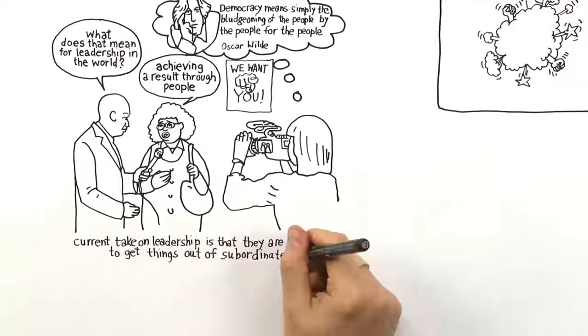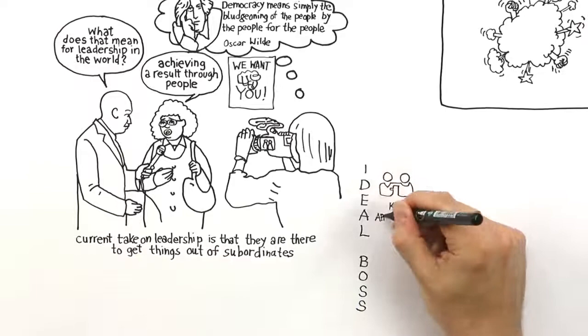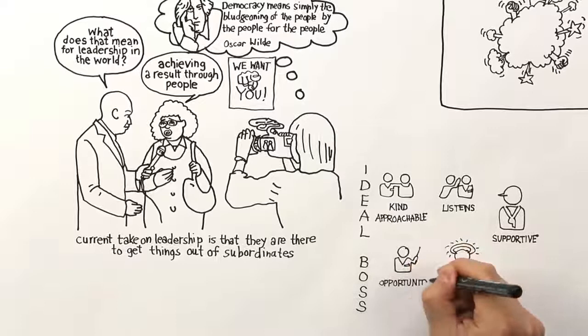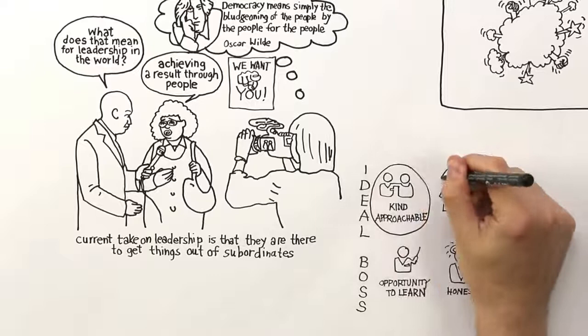If you ask people intuitively to construct an ideal boss, they will say a boss who's kind, who's approachable, who listens, who's supportive, who's honest, who's fair, and who gives me an opportunity to learn. What you get is a huge bag of words, but there are synonyms in that bag and you can distill them to two core themes.